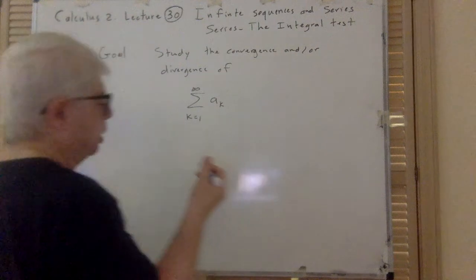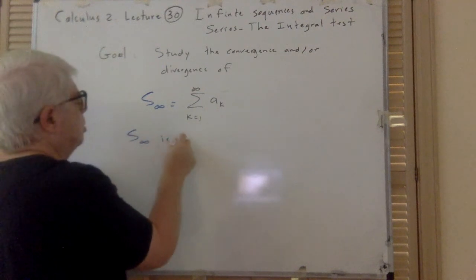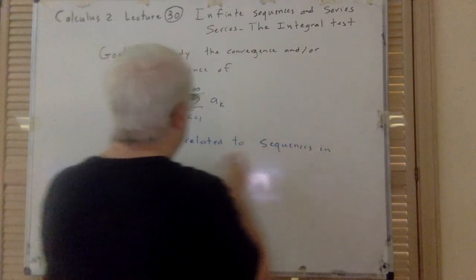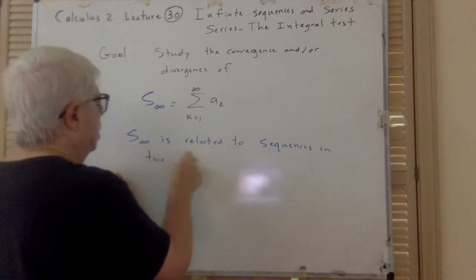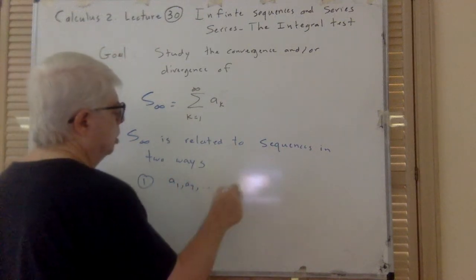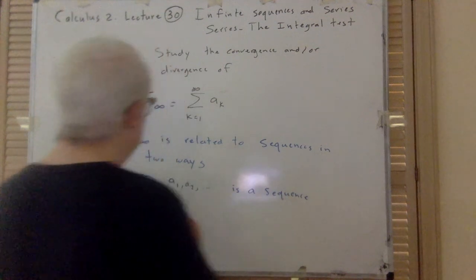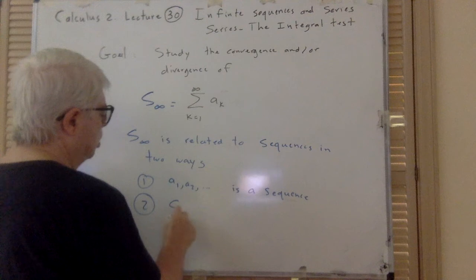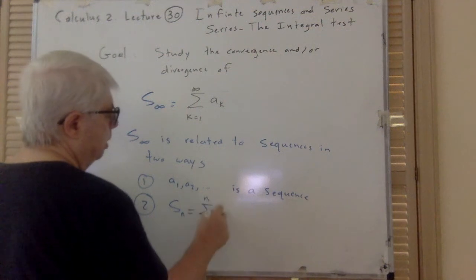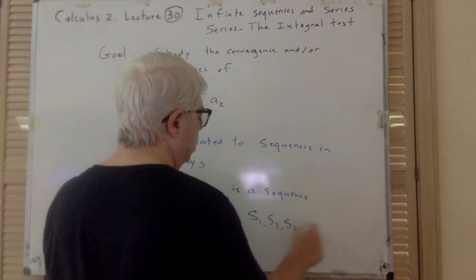The infinite series S_infinity is related to sequences in two ways. First, the a_i's — a₁, a₂, ... — form the sequence. Second, if we stop at a certain n, we get sigma from k=1 to n of a_k. This gives us S₁, S₂, S₃, ... which is also a sequence.